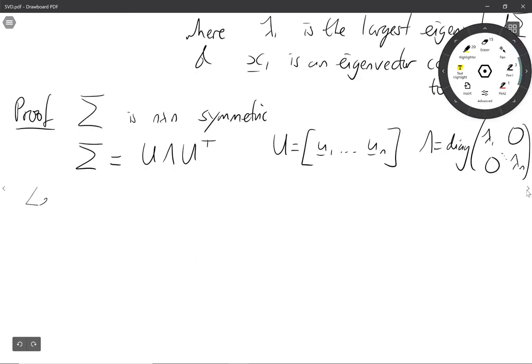So let's let a be a unit vector, a transposed a is 1. Then let's consider a transposed Σ a and we're going to find the best possible choice of a.